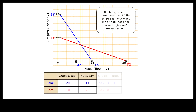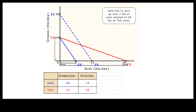Similarly, we can compare the relative cost of producing grapes in terms of nuts foregone between Jane and Tom. Suppose Jane produces 10 pounds of grapes. We can answer this question easily by keeping the relative slope of Jane's PPC constant, but lowering the curve to start from 10 pounds of grapes on the vertical axis. Here we can simply read Jane's relative cost of producing 10 pounds of grapes in terms of nuts foregone from the horizontal axis. That is 7 pounds of nuts.